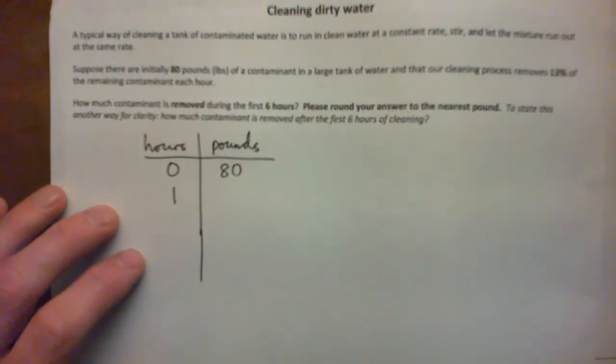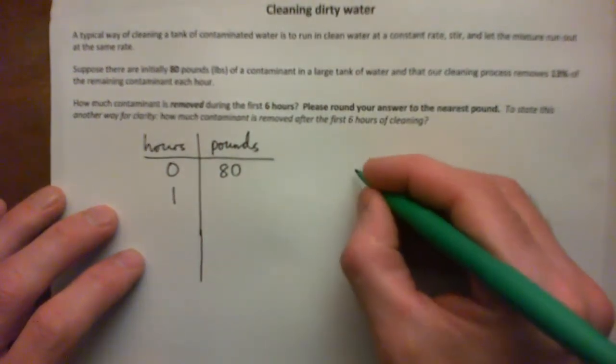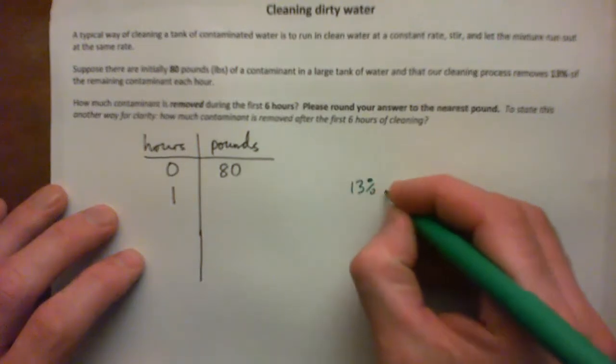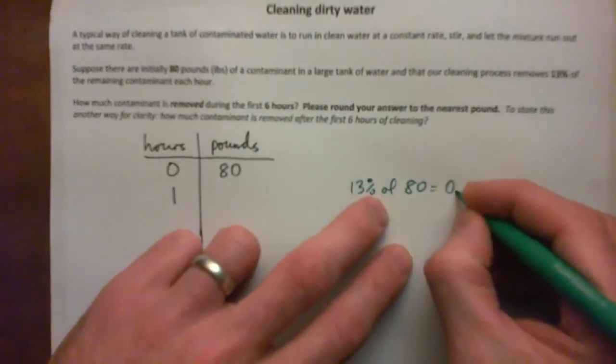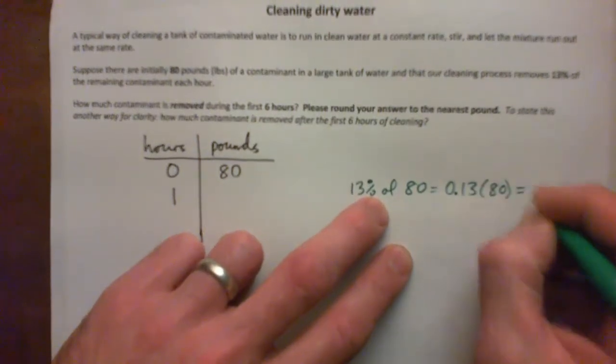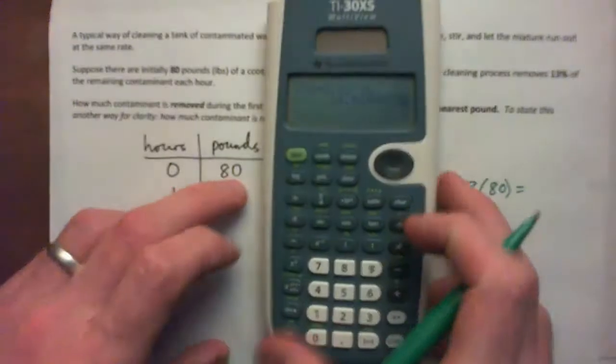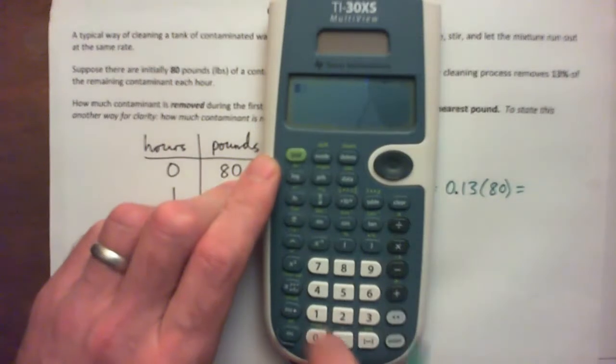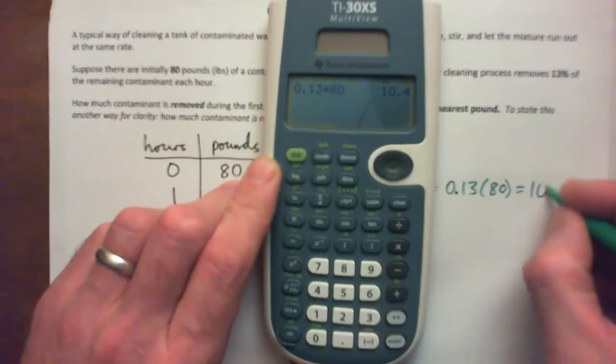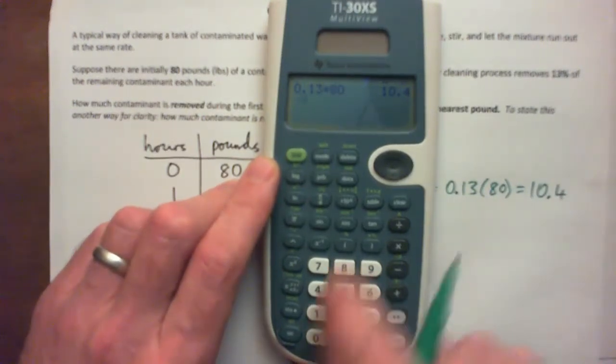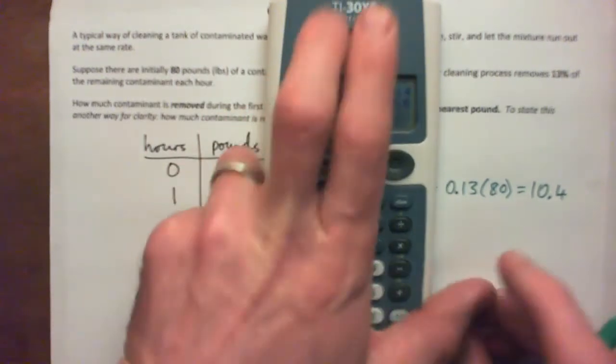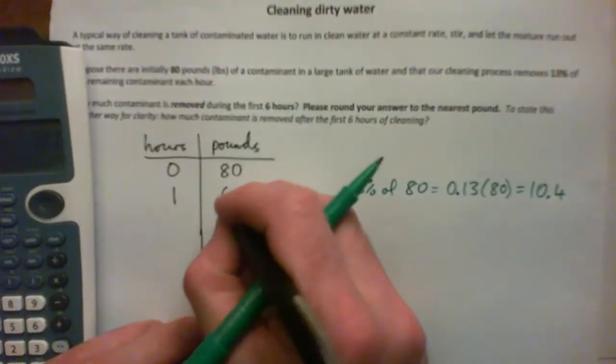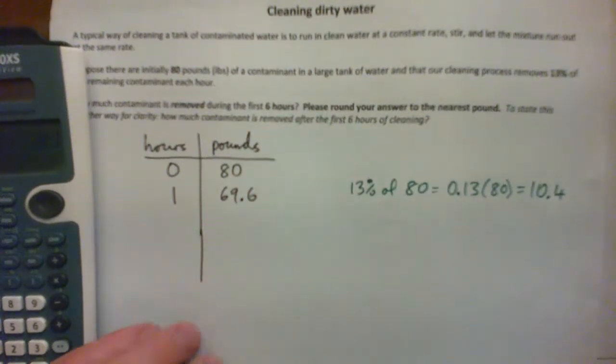So after one hour, we could get 13% of 80. That's 0.13 times 80, which is 10.4. Then we can subtract that. So we can go 80 subtract 10.4 and that gives 69.6. After one hour, we have 69.6 pounds left.